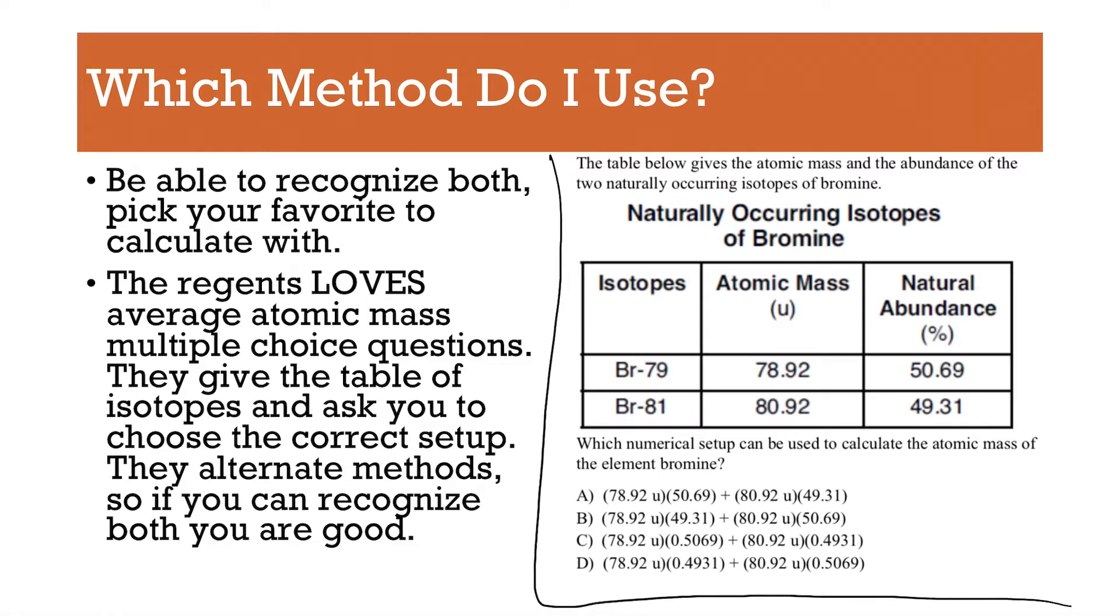If you look at this example, this is a regents question. It says, which numerical setup can be used to calculate the atomic mass of the element bromine? So, we have the atomic mass and we have the natural abundance. Nothing is divided by 100. So, it looks like they took these and converted them to decimals. So, you get 0.5069 and you get 0.4931. So, which one of these answer choices would be the best way to show the numerical setup for the atomic mass? And if you chose C, this would be correct because you're taking this mass times the percentage as a decimal and adding that to this mass times that as a decimal. So, your answer would be C.